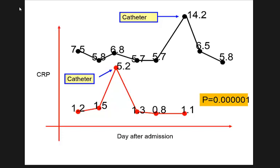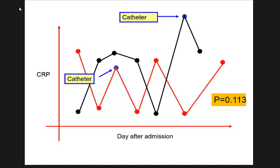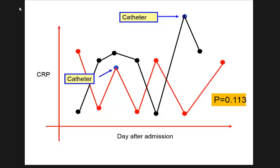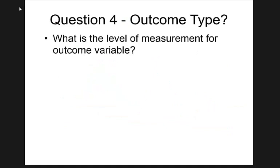You now know you need a statistical test that can differentiate which data come from which patient. Linear regression, logistic regression, and Cox regression don't even ask you for an ID — they treat all observations as independent. For repeated measures data, you need mixed-effect regression or GEE regression, which are designed for repeatedly measured data and give you the correct p-value.